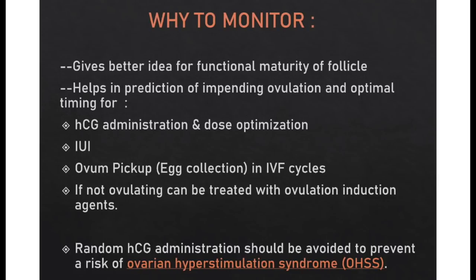With the help of follicular monitoring, we can evaluate growing follicles at regular intervals to catch a functionally active follicle and the time of its rupture. Follicular monitoring gives a better idea of functional maturity of the follicle. It helps in prediction of impending ovulation and optimal timing for HCG administration, for dose optimization, for IUI, and for ovum pickup in IVF cycles. If the woman is not ovulating, she can be treated with ovulation induction agents. This helps the clinician avoid random HCG administration which can cause ovarian hyperstimulation syndrome.